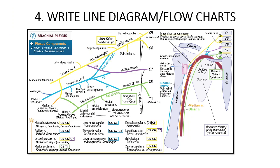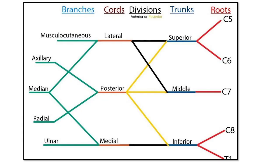Tip four: write line diagrams and flowcharts. For example, brachial plexus flexors — it is a very commonly asked question, and you must know it inside out. In the exam, if you write a flowchart showing C5, C6, C7, C8 with roots, trunks, divisions, cords, and branches, this will give you 5 out of 5, or at least 4 out of 5. Do the proper line diagram and flowchart.